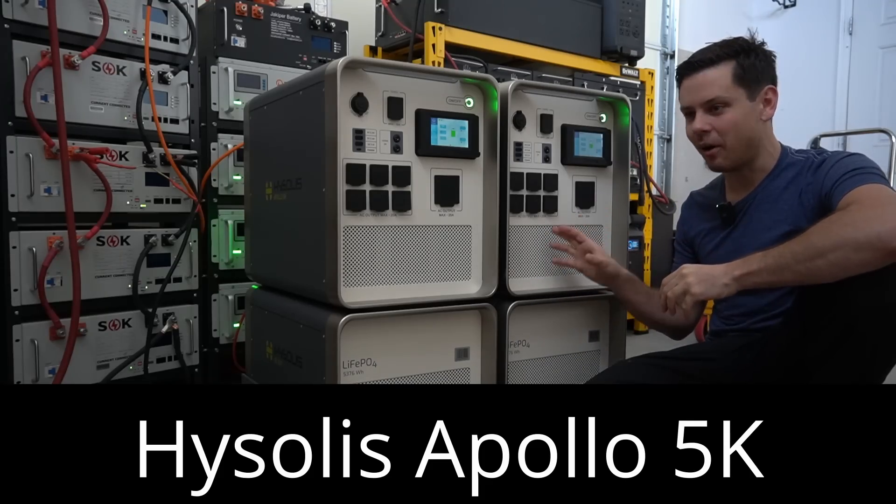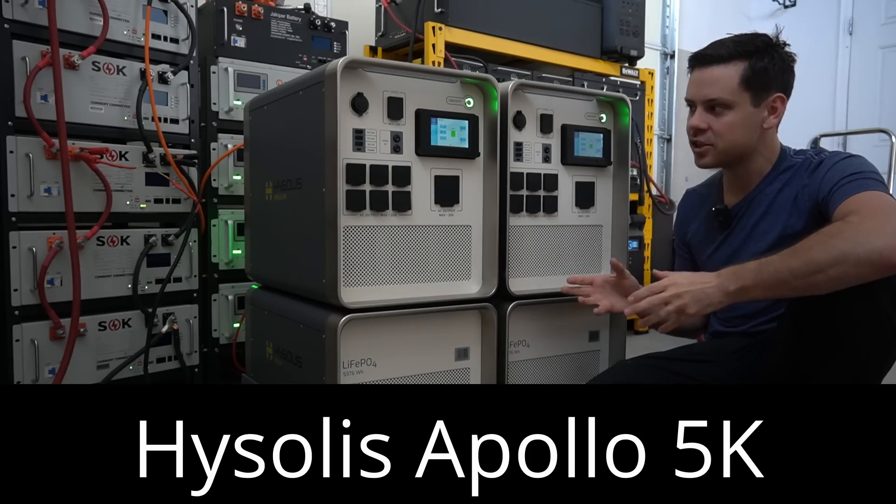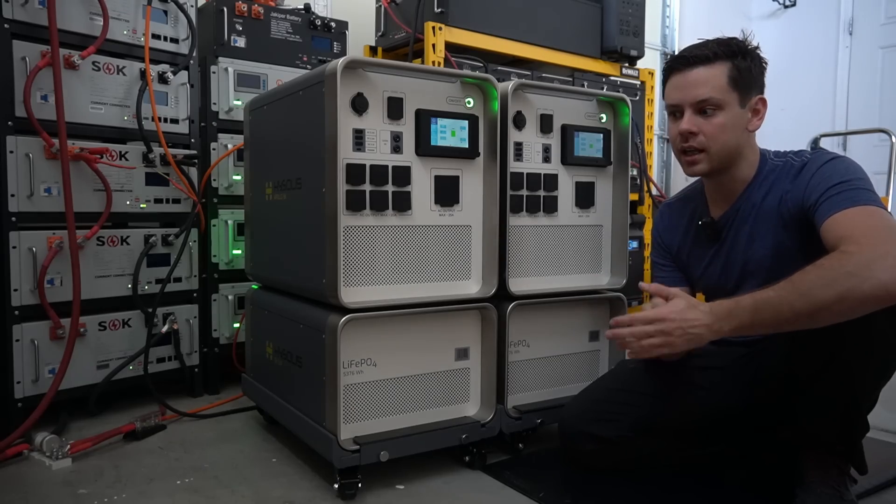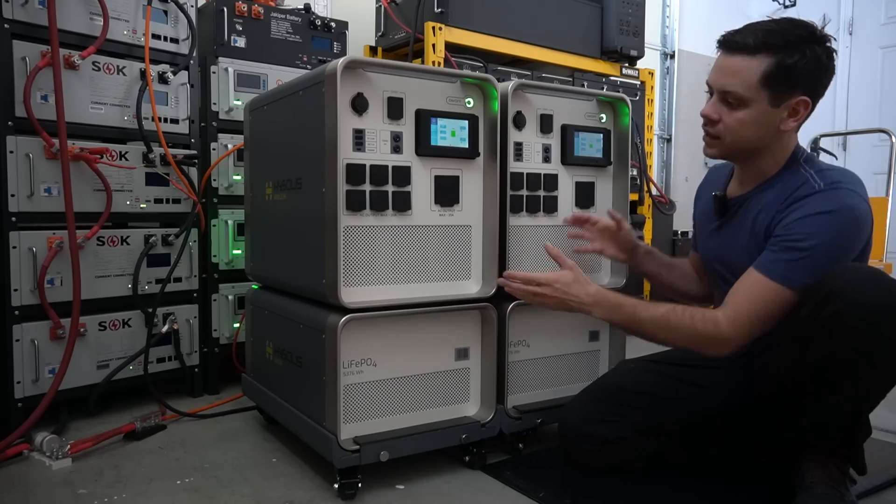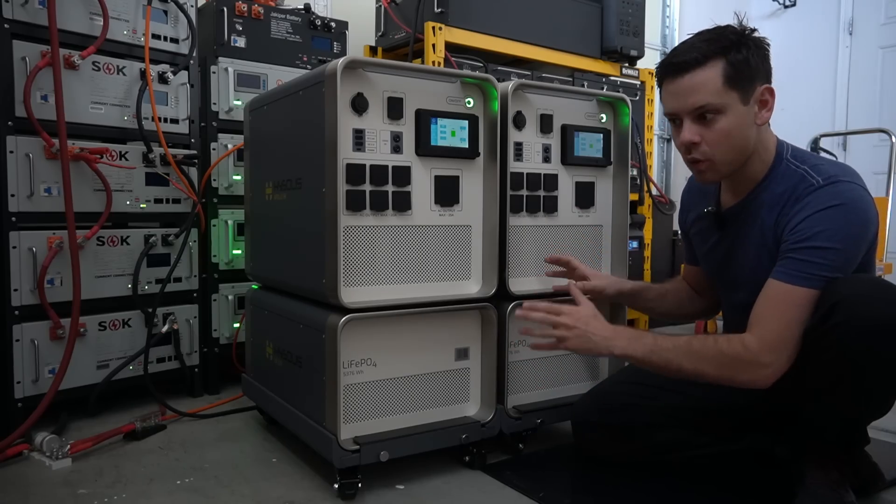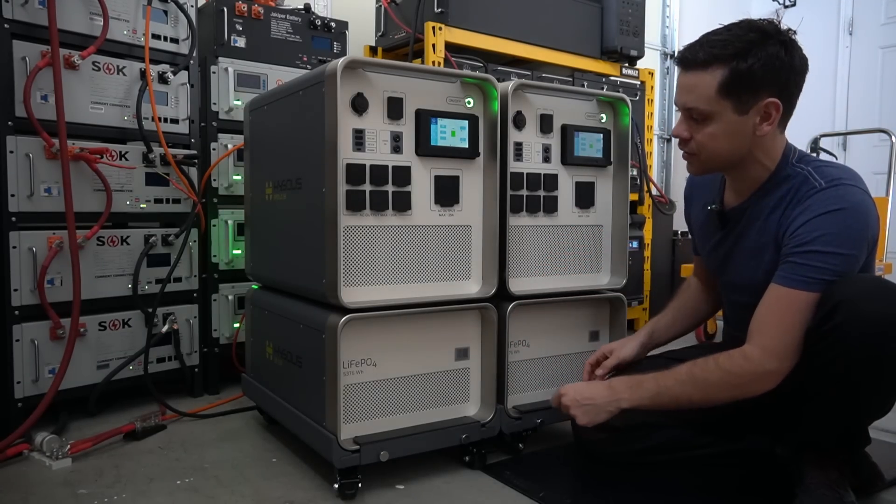Today we're testing out the Hysolus Apollo, and this is the first solar generator on the market with features that I've been requesting for years. EcoFlow Delta, Bluetti, and all of the others have not been able to add basic features to make these actually usable for off-grid use. So far this is the first one that claims to be able to do everything, and I'm actually excited to test it for this reason.